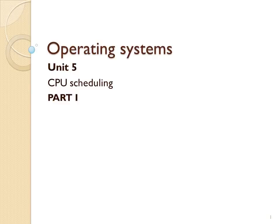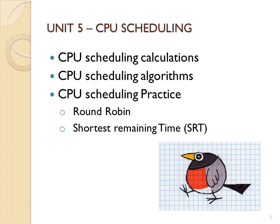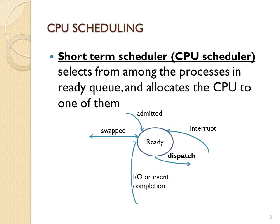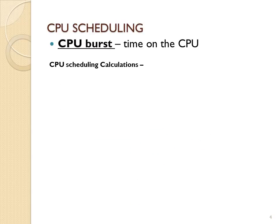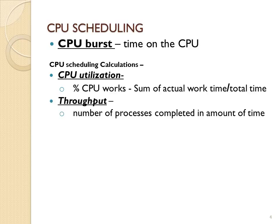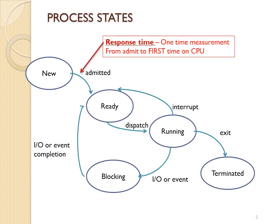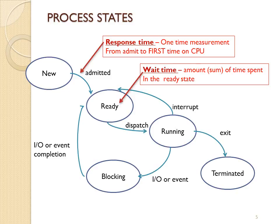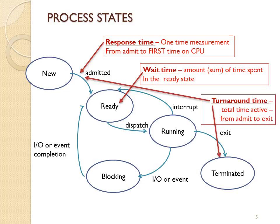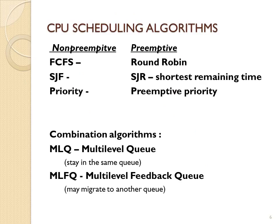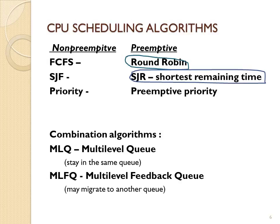Welcome back to Operating Systems. We are now in Unit 5, Part 1, where we'll be doing more CPU scheduling — some practice with round-robin and shortest remaining time. The short-term scheduler organizes processes in the queue to be dispatched onto the CPU. Brush up on your calculations: turnaround time, waiting time, and response time. Response time is a one-time measure; wait time is the sum of time spent in the ready state; and turnaround time is the total time active.